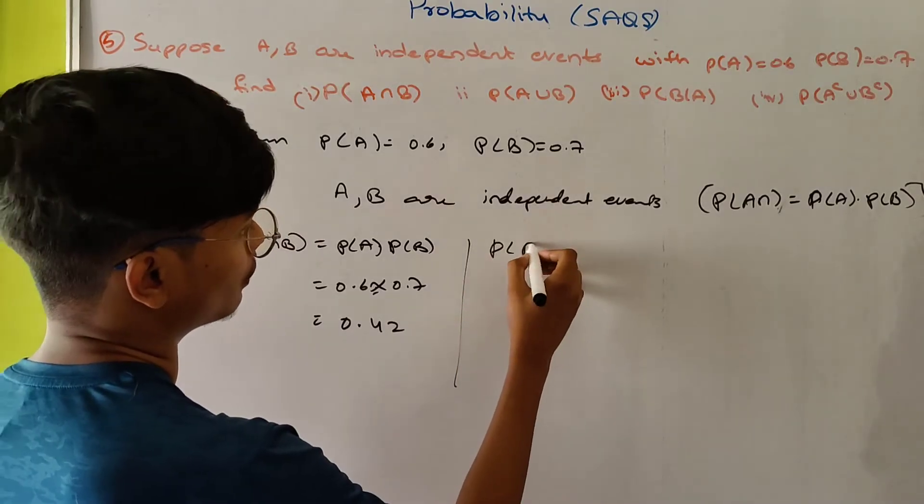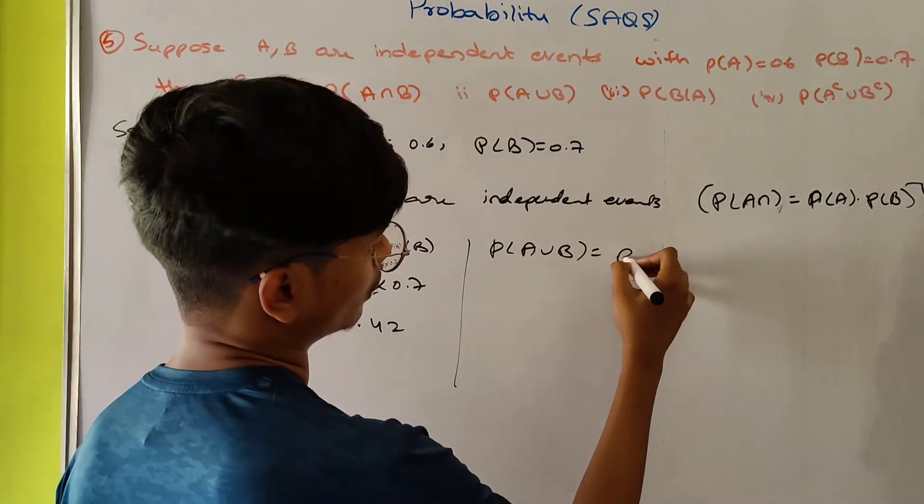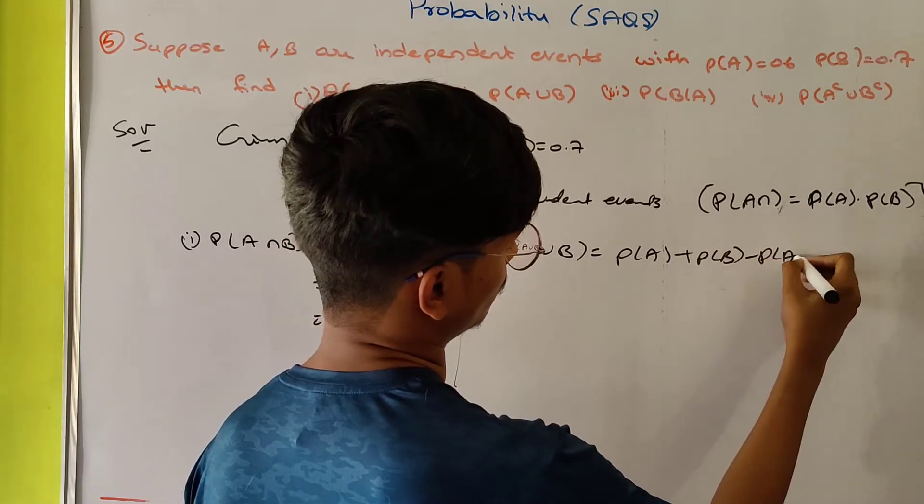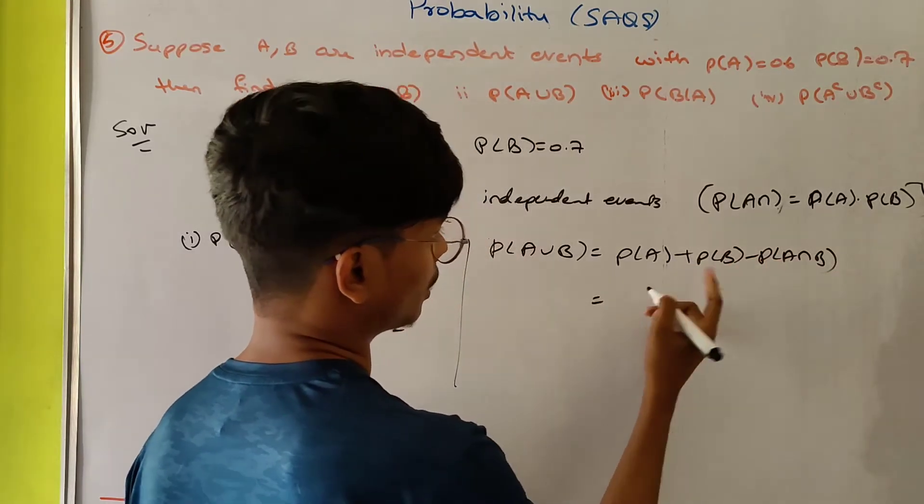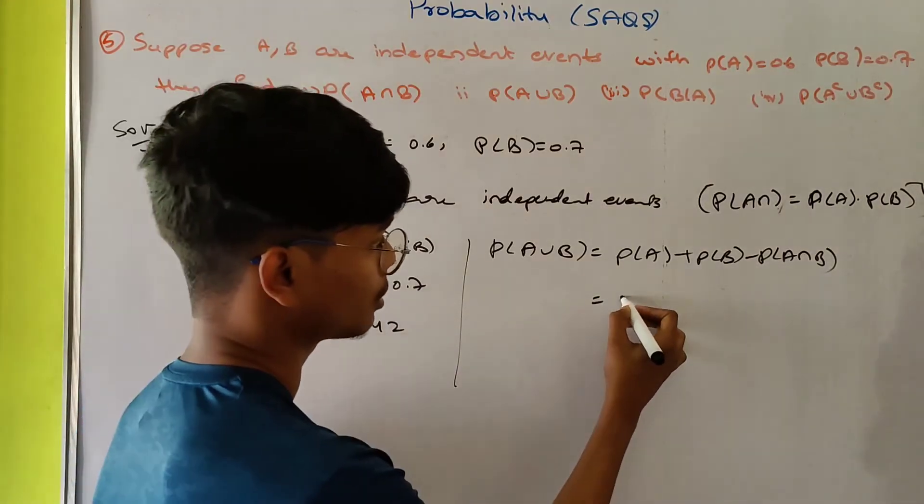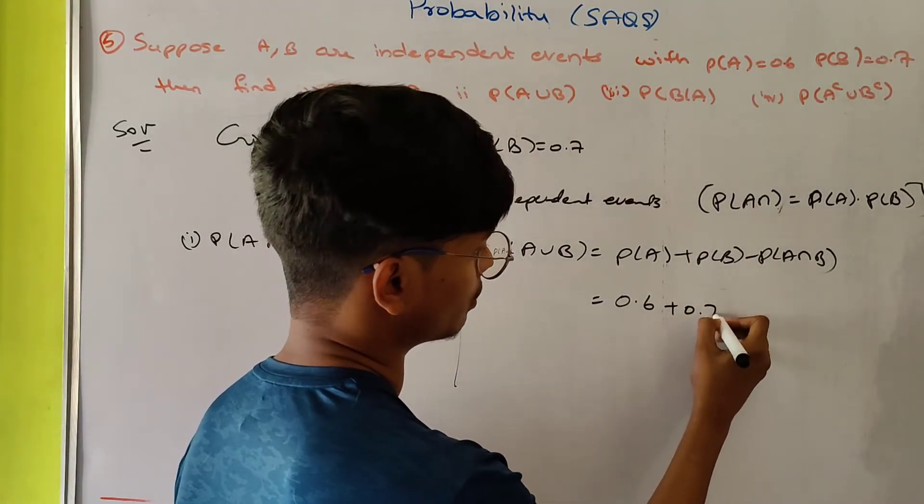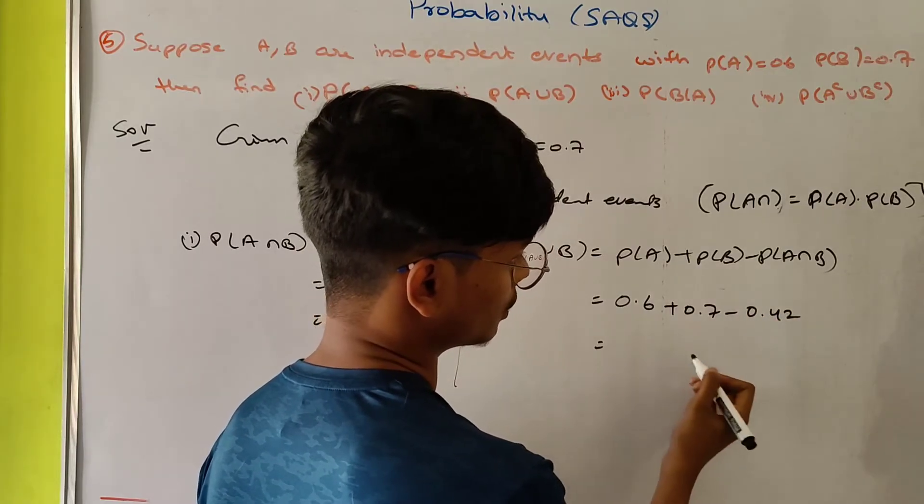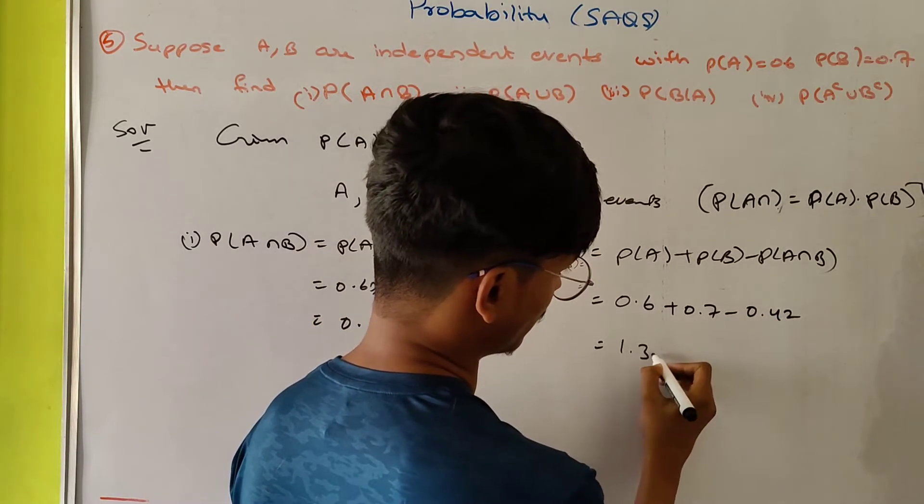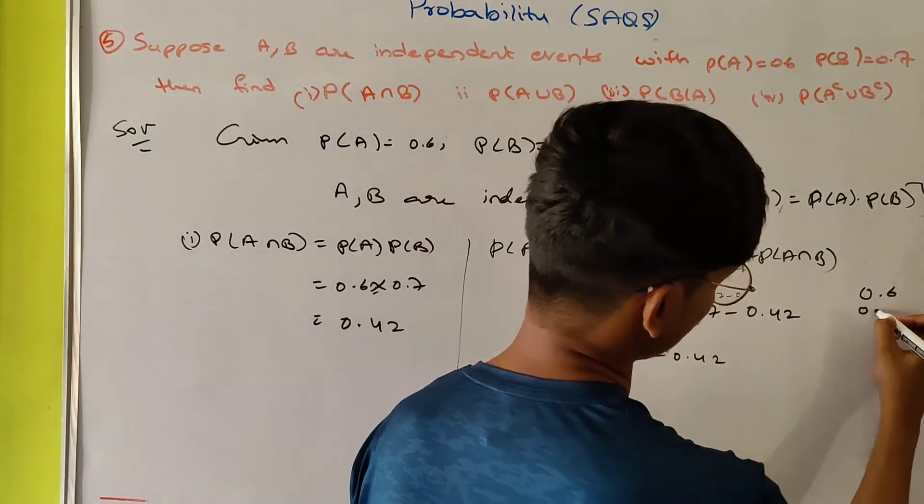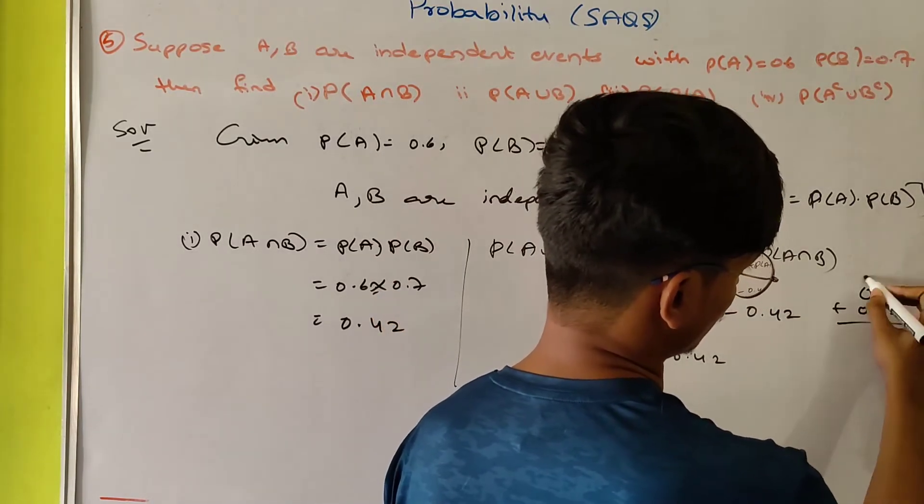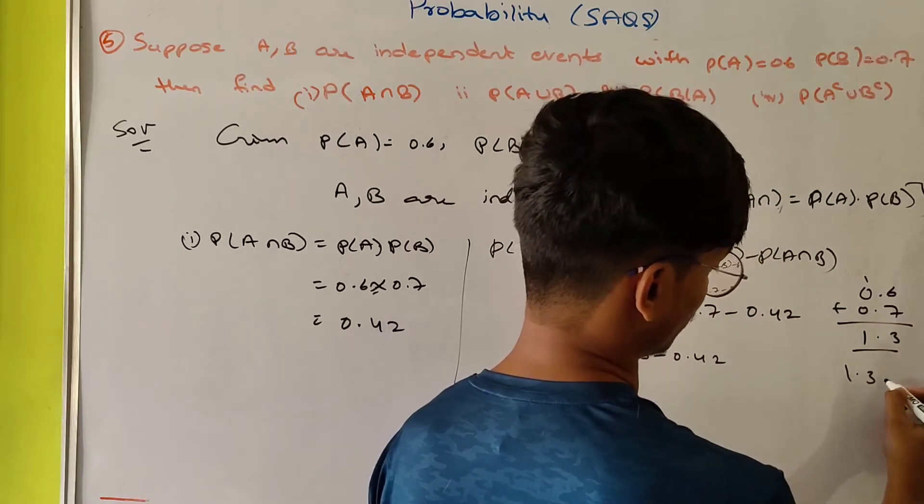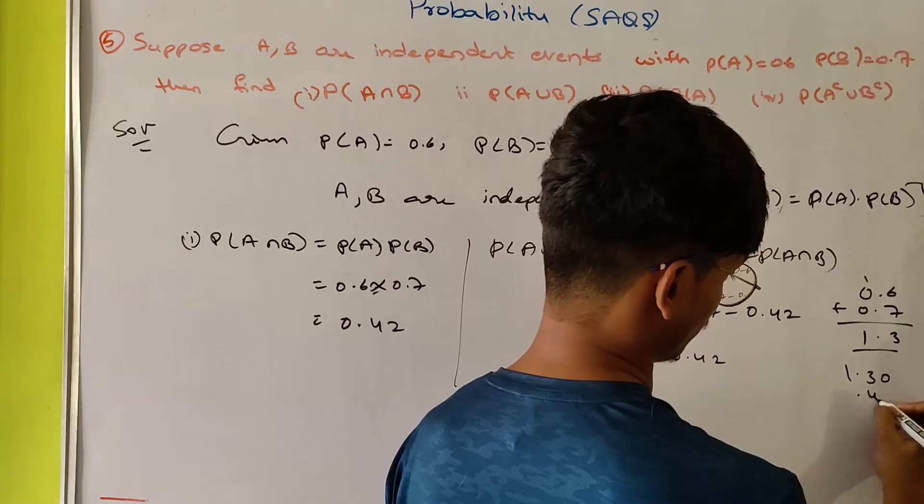Next, P(A union B). That is P(A) plus P(B) minus P(A intersection B). Using the A intersection B value: 0.6 plus 0.7 minus 0.42. This equals 1.3 minus 0.42 = 0.88.